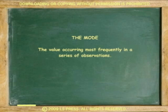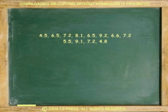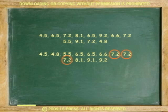The last measure we'll study here is the mode. The mode is the value occurring most frequently in a series of observations. For example, find the mode of the following data. First, organize data from lowest to highest. Number of observations, 12. The value occurring most often is 7.2. It shows up three times.